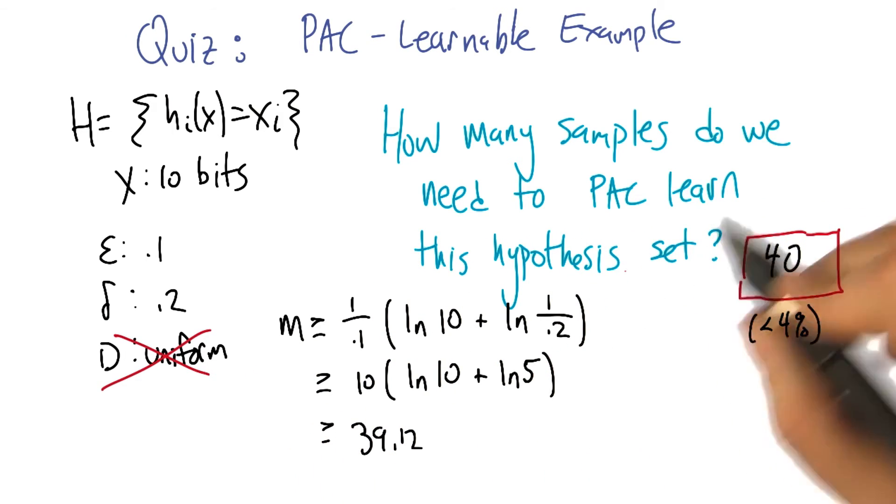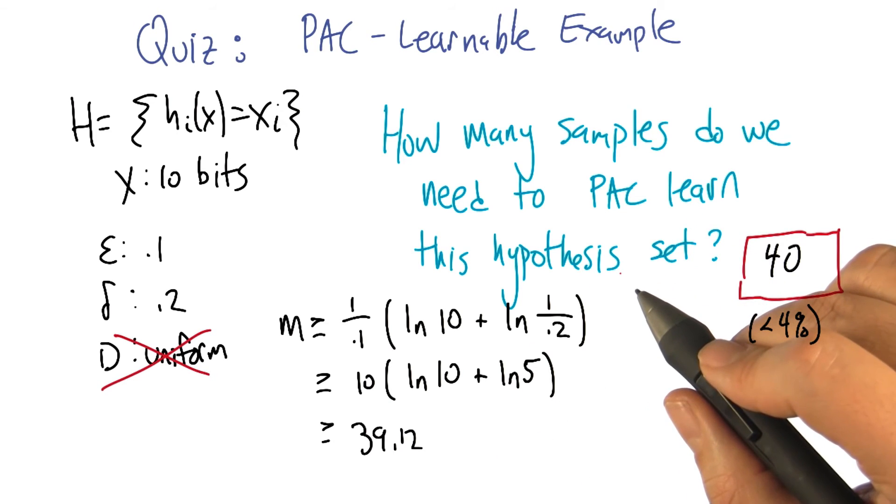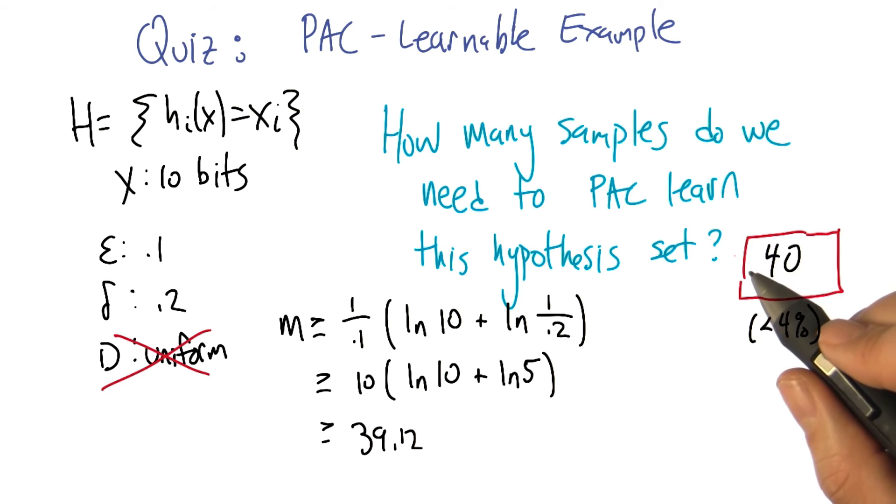So, if it's a really hard distribution and some tough examples never appear, then we're unlikely to see them in the training set, but they're not going to contribute very much to the true error. Well, that makes sense.